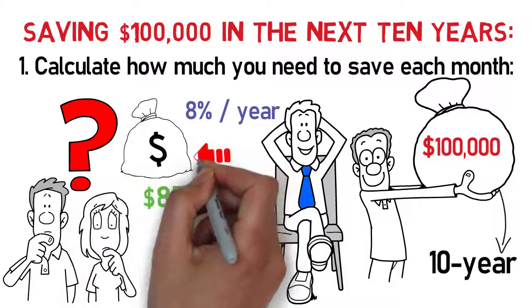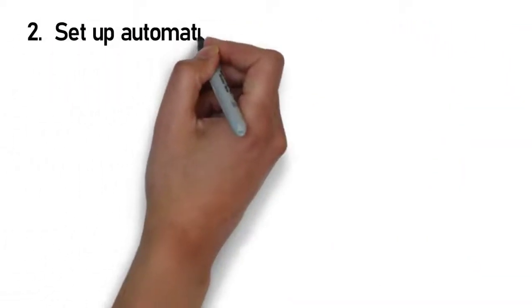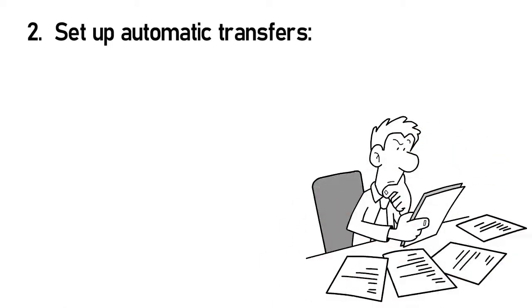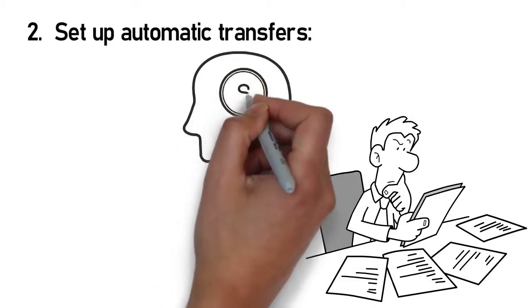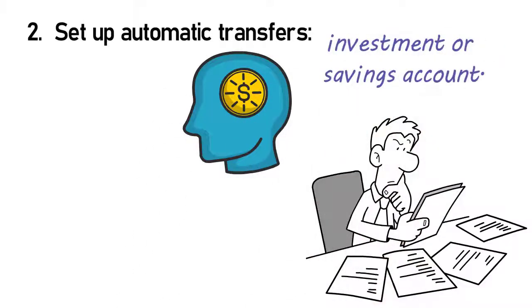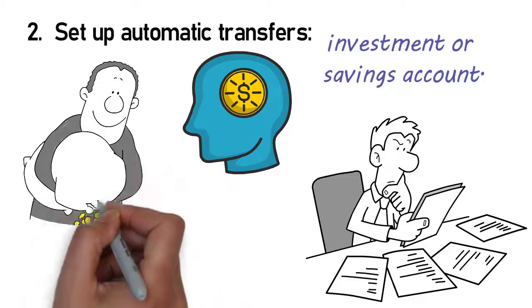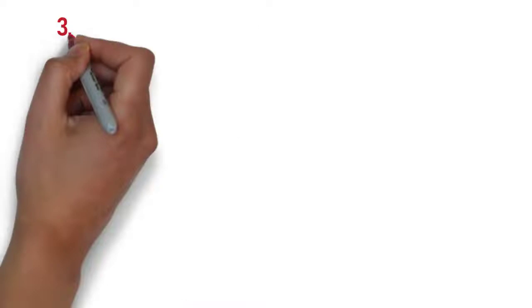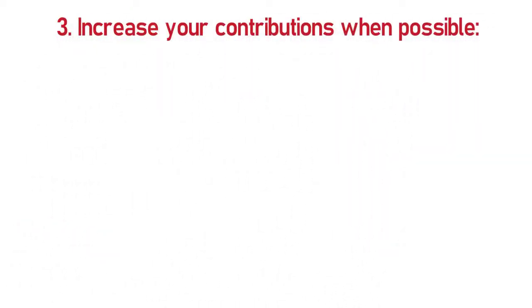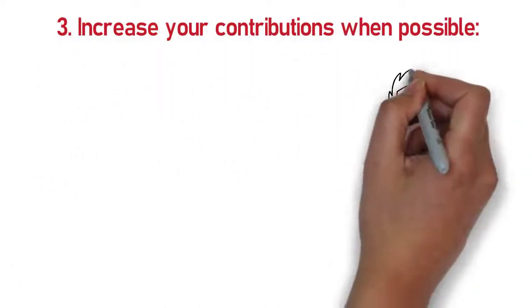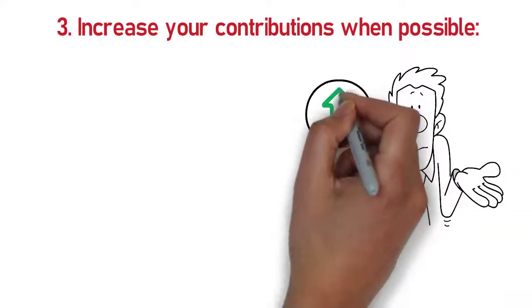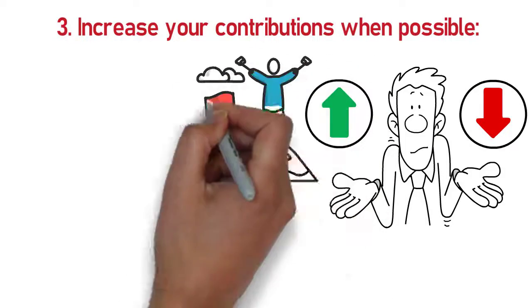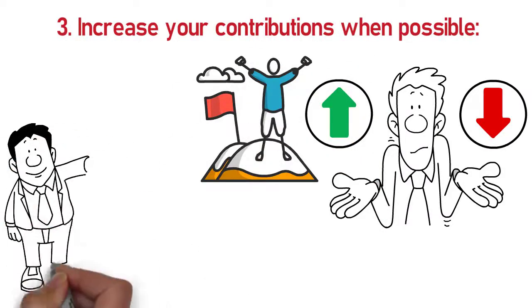Number two is to set up automatic transfers. Once you calculate how much money you need to save each month in order to reach your goal, set up automatic transfers from your checking account to your investing or savings account. This will ensure that you don't accidentally spend the money rather than putting it towards your goal. Number three is to increase your contributions when possible. If you receive a raise or financial windfall, don't forget to increase the amount that you're contributing to your savings or investment account. This will help you reach your goal more quickly and could also allow you to invest a larger portion of your income instead of spending it.